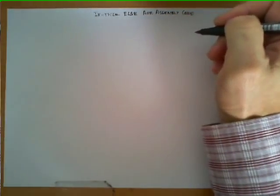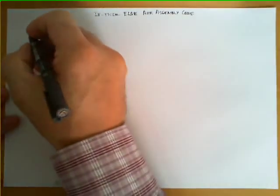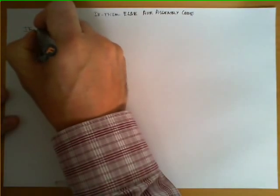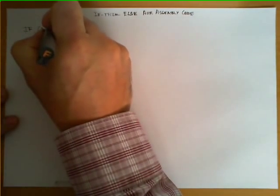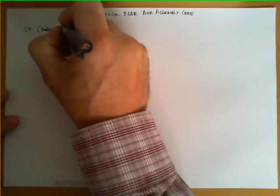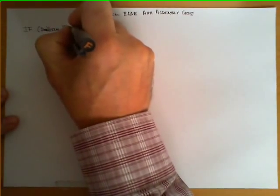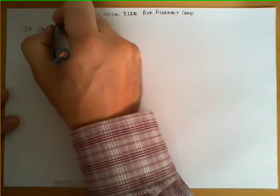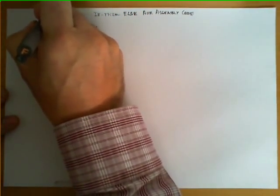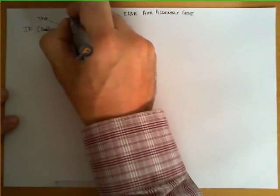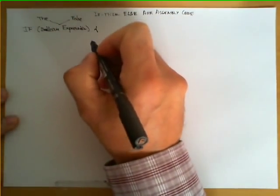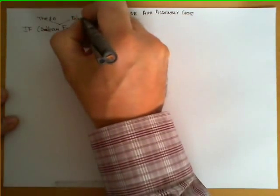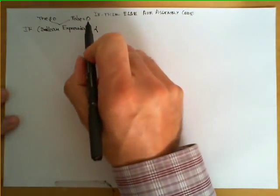The first thing we need to know about the if-then-else statement is its syntax and semantics. The syntax is very simple: we have the keyword if followed by a parenthesis, and inside this parenthesis we write a boolean expression. This boolean expression, when evaluated, has to return only two possible values — either true or false. For simplicity, true will be represented by any value different from zero, and false by the value zero.